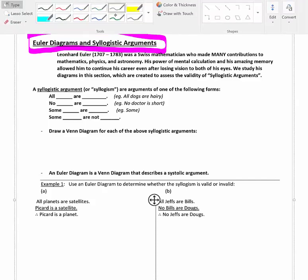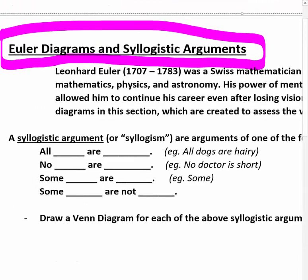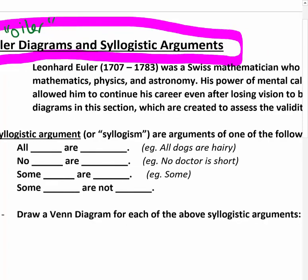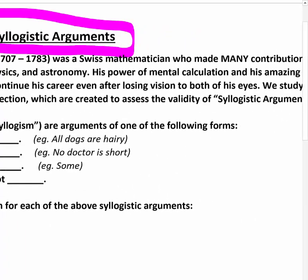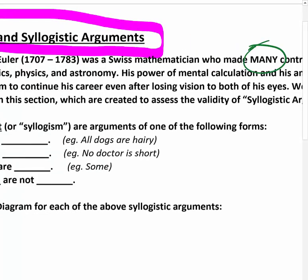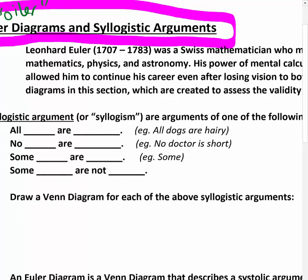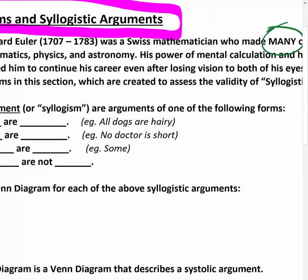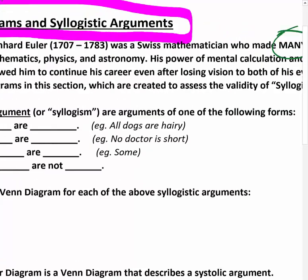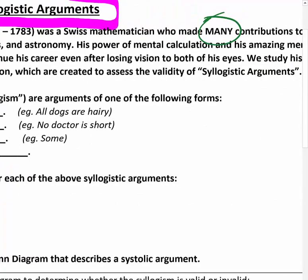And as you can imagine, Euler Diagrams is named after some dude, Leonard Euler. I know it seems like that's not how you pronounce that name, but that's really how you pronounce it. Leonard Euler, in the 1700s, was a Swiss mathematician who made many contributions to mathematics, physics, and astronomy. His power of mental calculation and his amazing memory allowed him to continue his career even after losing vision to both his eyes. Can you imagine that? This dude lost vision to both of his eyes and he's still doing math and physics and astronomy.